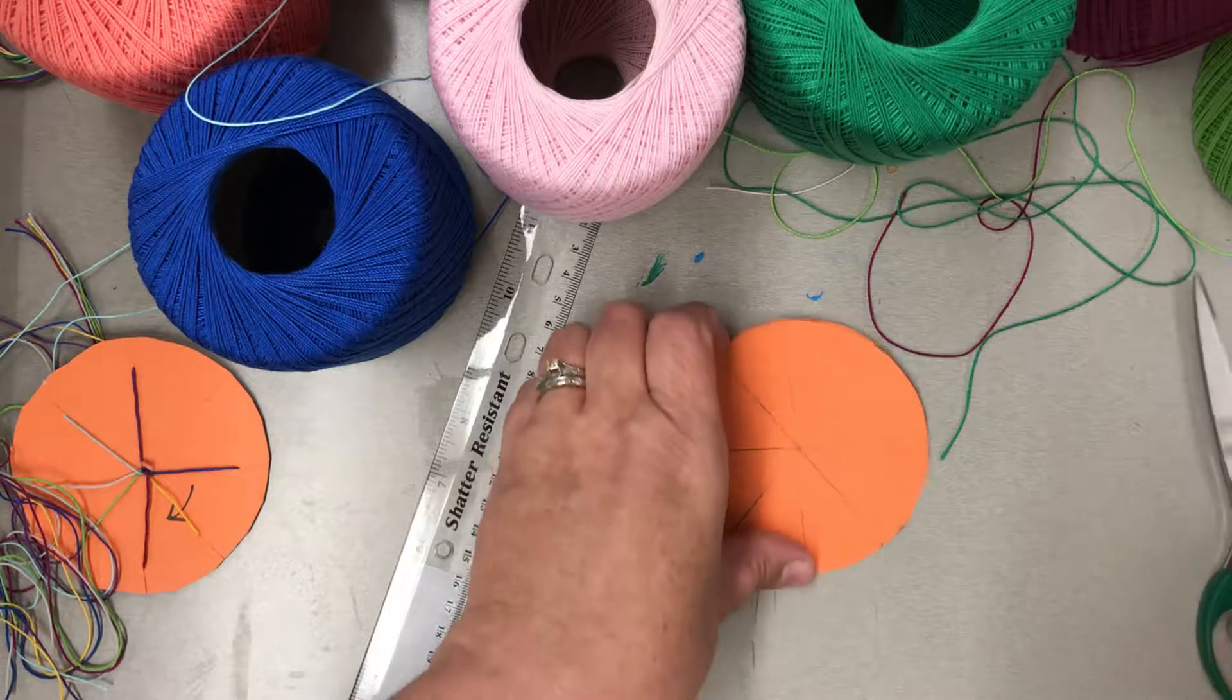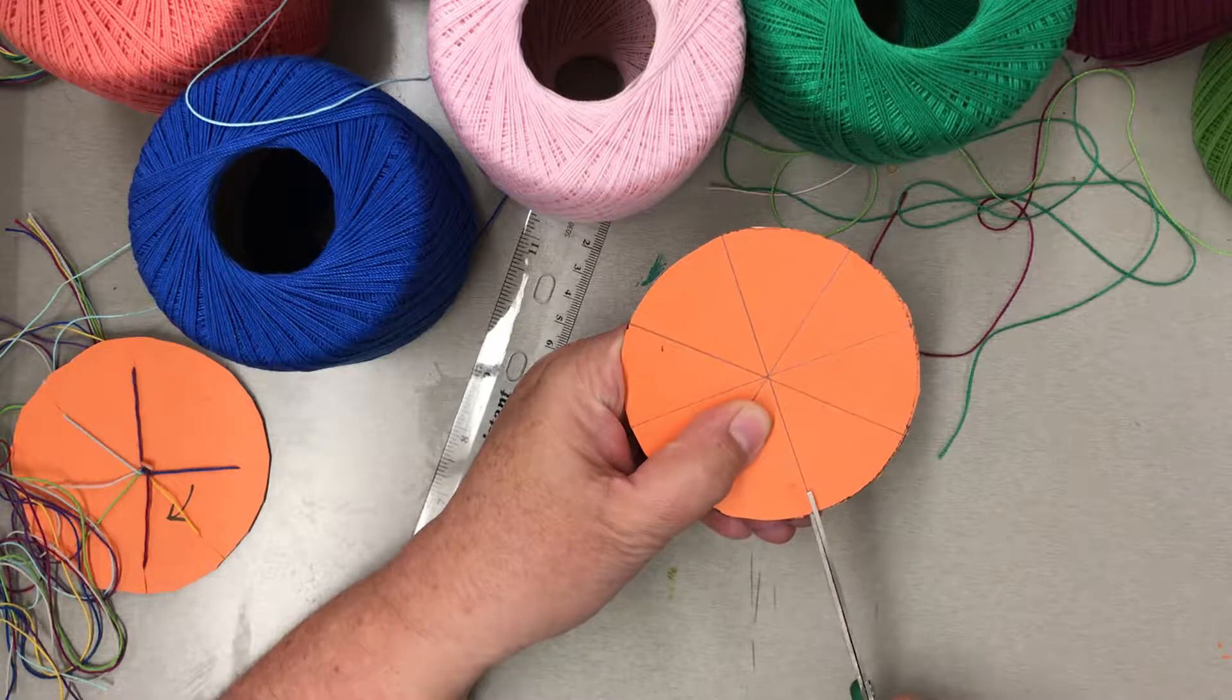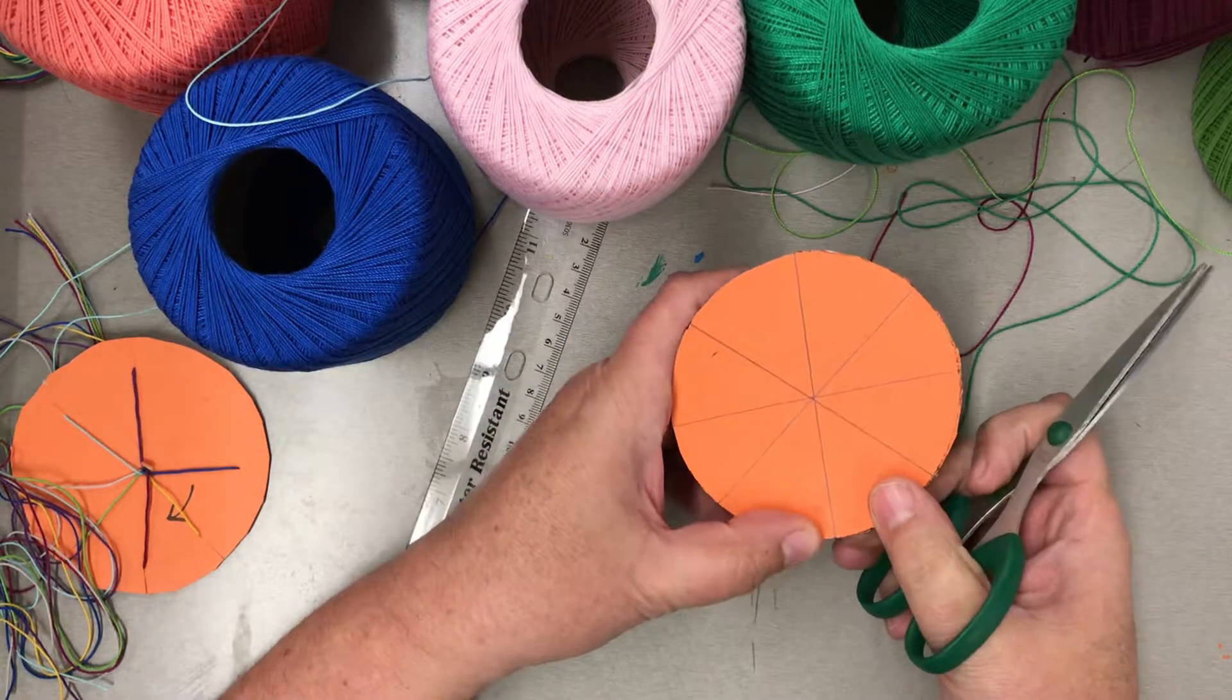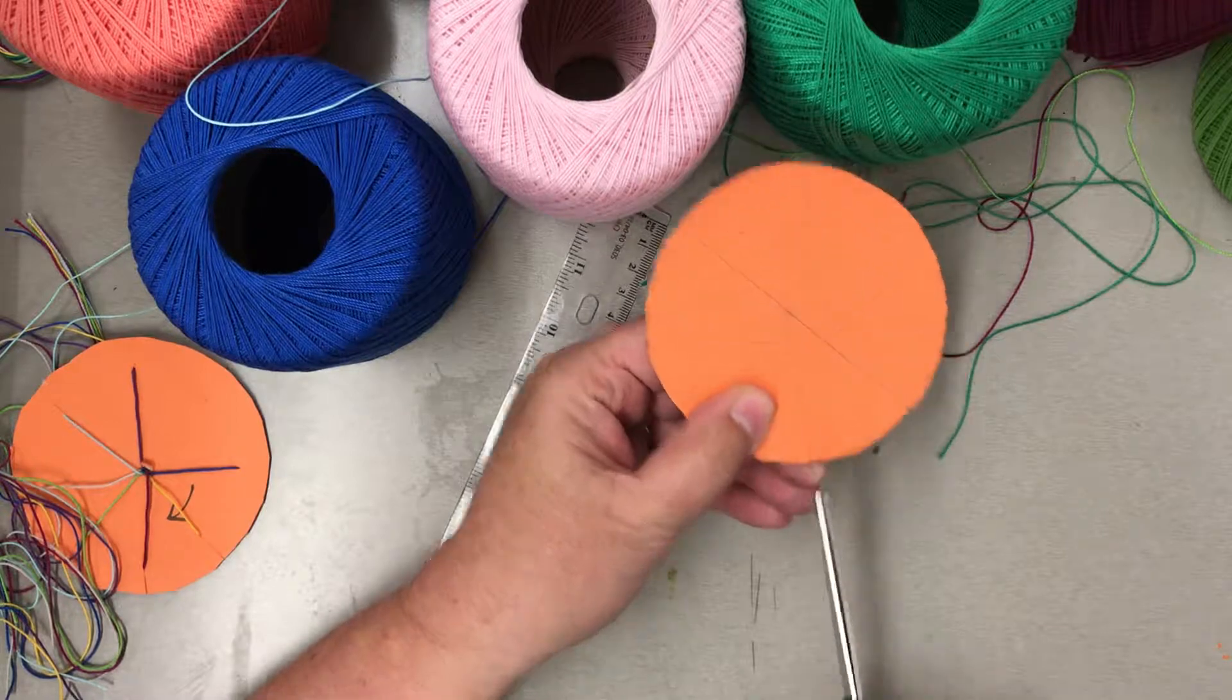The next thing you're going to do is cut a little slit in the circle on the very edges, right at the line. It is about a half inch or less.